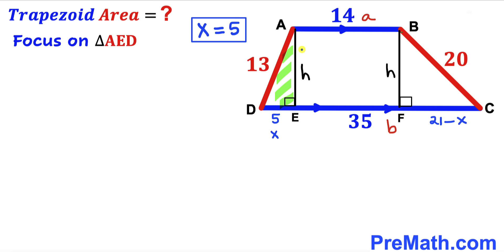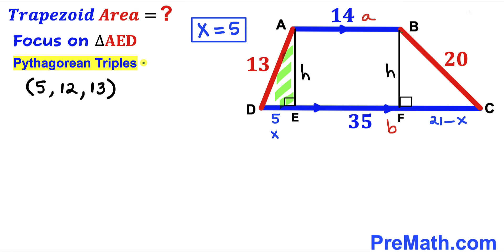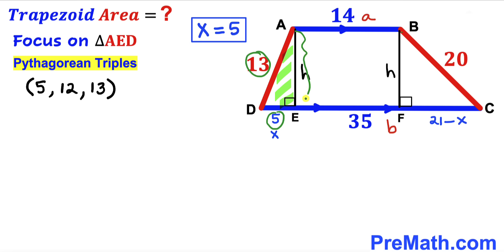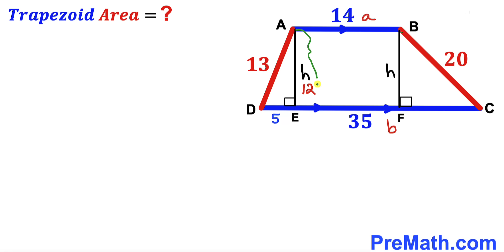We now return to right triangle AED. Recalling the Pythagorean triple 5, 12, 13: one leg is 5, the hypotenuse is 13, so the unknown side must be 12 units. Therefore h = 12 units, and the height of the trapezoid is 12.